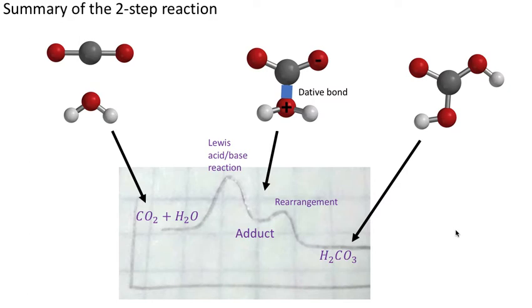Here's the summary of that two-step reaction: we have the reactants over here, carbon dioxide and water, undergoing a Lewis acid-base reaction to form the adduct, which has this dative bond and these excess formal charges, which then rearranges.